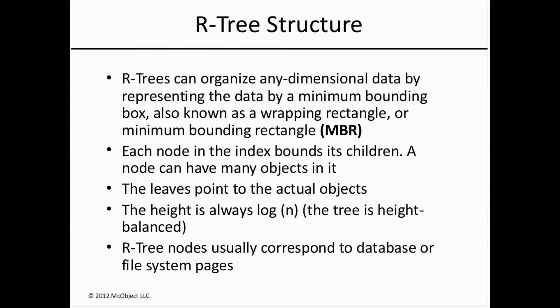The R-tree algorithm does the job well by mapping objects in space using a bounding box, or what we call a minimum bounding rectangle, abbreviated MBR. If an object is represented by a point with coordinates x, y, then the wrapping rectangle, or bounding box, is a degenerated rectangle in which the width and height are zero. For all other geographical objects — whether lines, polygons, or other arbitrary shapes — the wrapping rectangle is the smallest rectangle that fully contains the specified object.